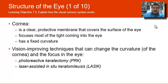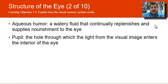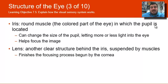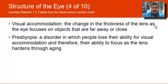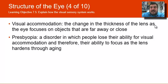To review: the cornea, aqueous humor, pupil, and iris — the colored round muscle — are at the front. The lens, suspended by muscles, can change shape to focus objects onto the back of the eye. Visual accommodation is the term for this change in thickness of the lens. The vitreous humor fills the open space behind the lens.